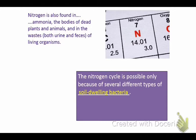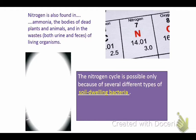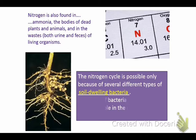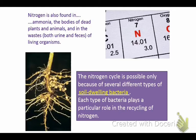The nitrogen cycle is possible only because of these soil-dwelling bacteria. We are dependent upon these bacteria for nitrogen and for life, which is kind of crazy. They live in the roots and stuff of plants, and each type of bacteria plays a particular role in the recycling of nitrogen.